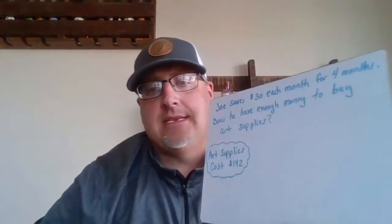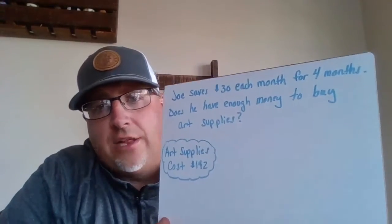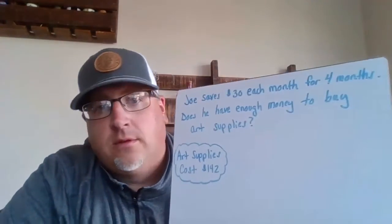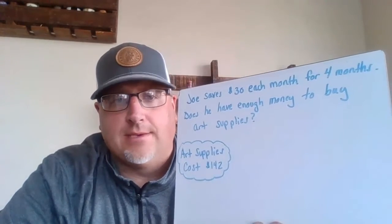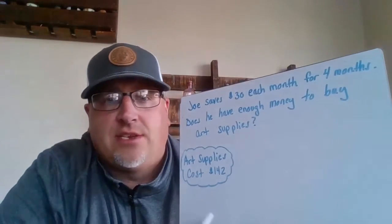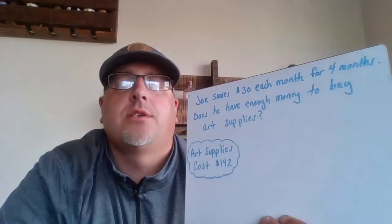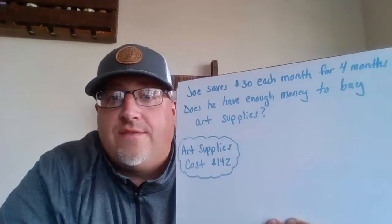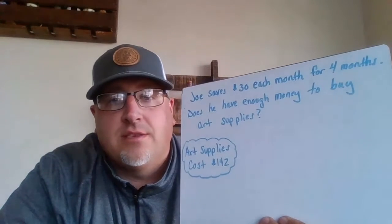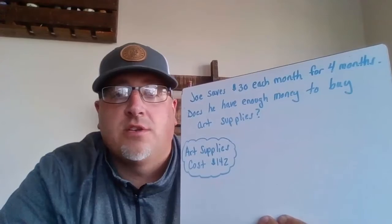Part two today: we're going to look at a word problem. Let's piece it out. It's going to have two steps. So not only are we going to solve the problem, but we're also going to have to answer a second question to get the final answer. Here is the question: Joe saves $30 each month for four months. Does he have enough money to buy art supplies? The art supplies cost $142.